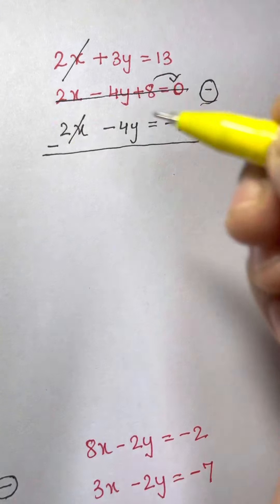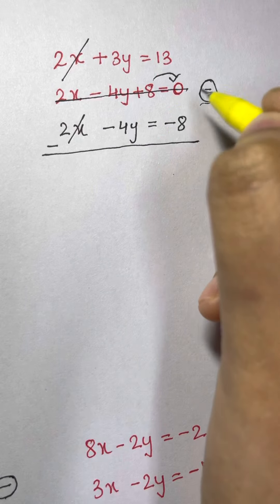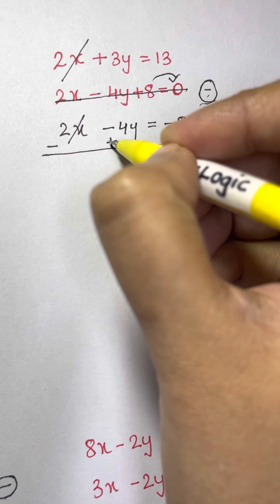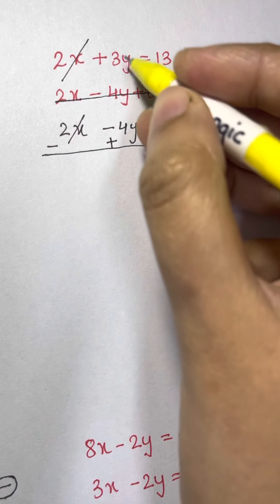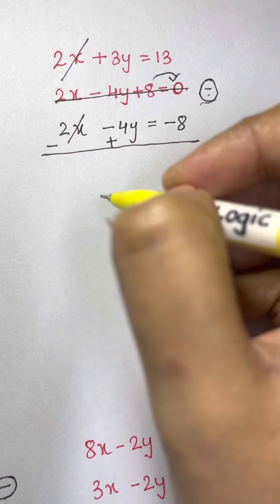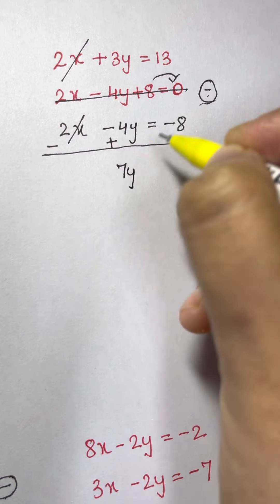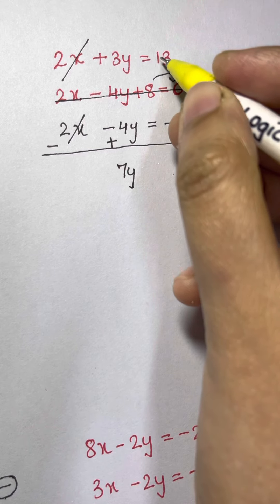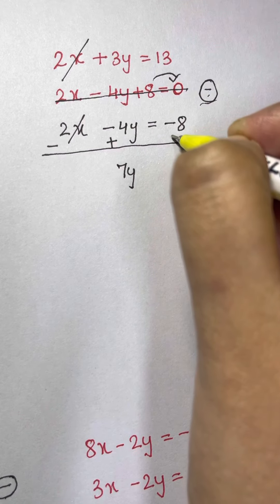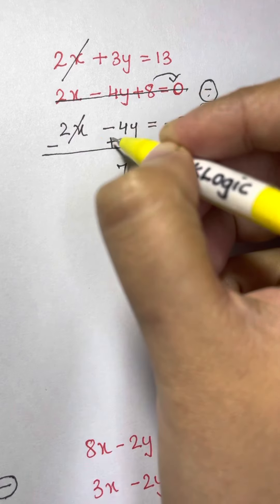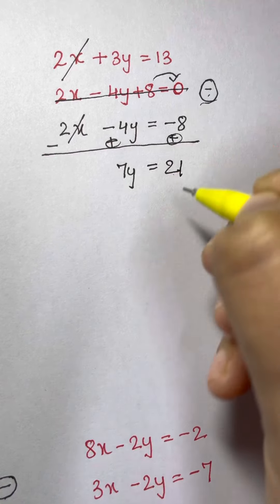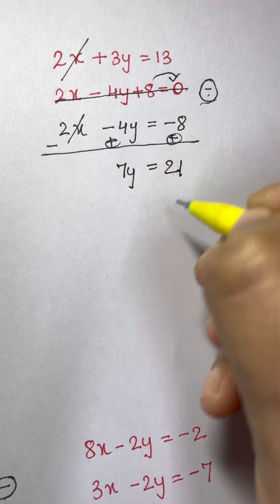Plus 2x minus 2x will get cancelled. And here minus into minus, this will become plus. If I have a minus and minus, it will become plus. 3 plus 4y will give you 7y. And here, 13 minus of minus will become plus. So 13 plus 8. So you have to add here. 13 plus 8 is 21. So y is equal to 3. 21 divided by 7 is 3.